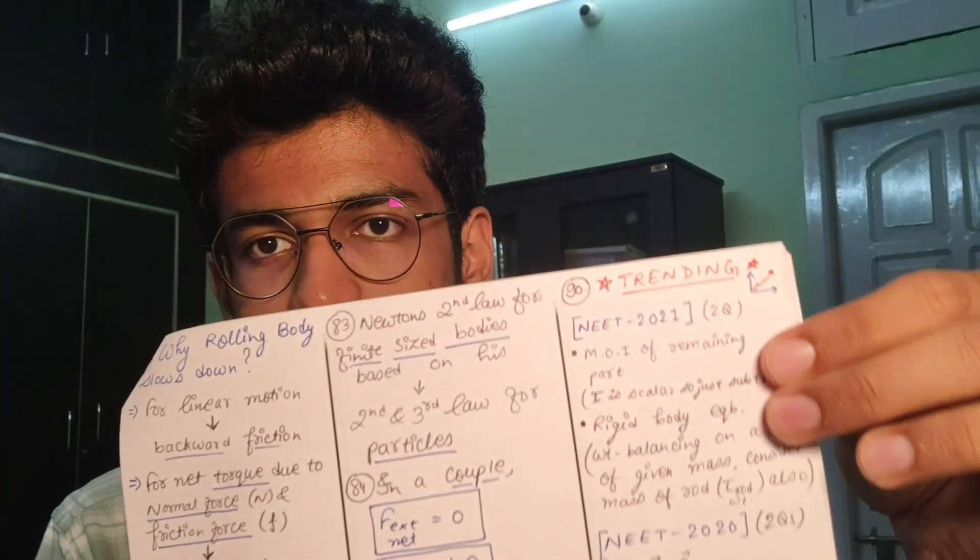Finally, it's time to integrate previous year questions of NEET into your short notes. As far as resources are concerned, you can check out any content-providing website of any premier institute to find all the previous year questions — a few links are mentioned in the description. Solve the previous year questions of the chapter concerned and find out the topics from which these questions are asked. I have made a trending section in my short notes to make it interesting. You have to mention at least 5 to 6 years of previous year questions, identify the topics from which questions were asked in each year, and mention the year along with all the topics asked from that particular chapter.